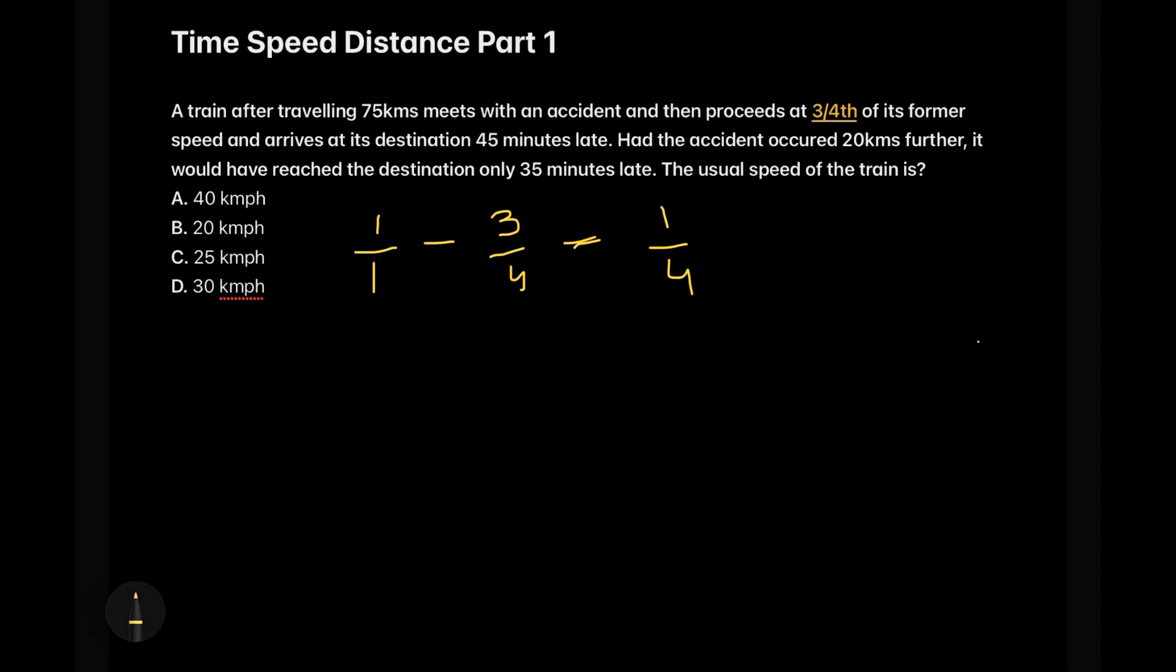Now if you guys remember the concept video or if you have seen the concept video, you would have remembered that speed and time are inversely proportional to each other and distance is the constant. So over here we know that when there is a decrease of one by four in the speed, it is obvious that there will be an increase of one by three in the time.